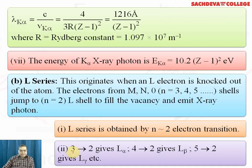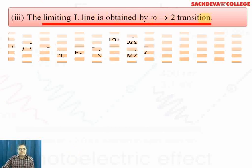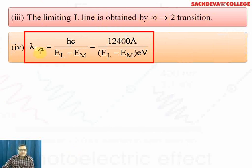The transition 3→2 gives L alpha line, 4→2 gives L beta line, and 5→2 gives L gamma, etc. The limiting L line is obtained by ∞→2 transition.